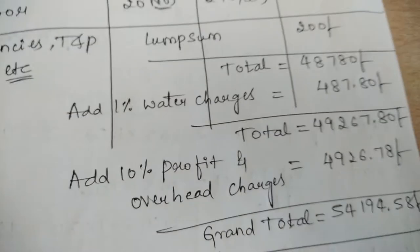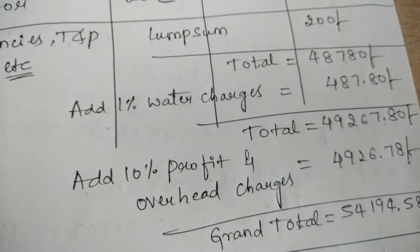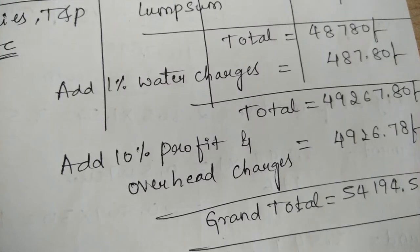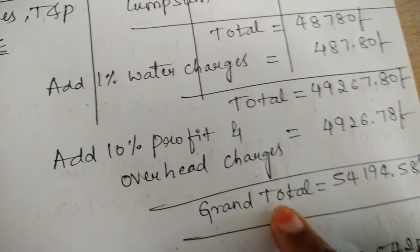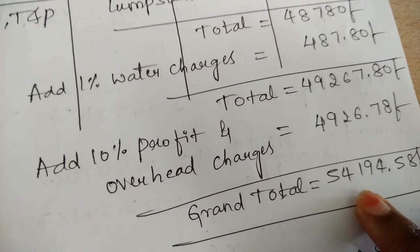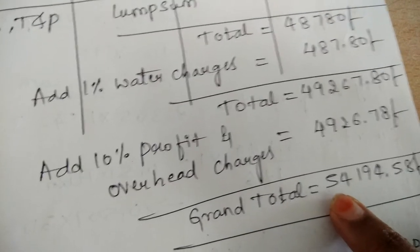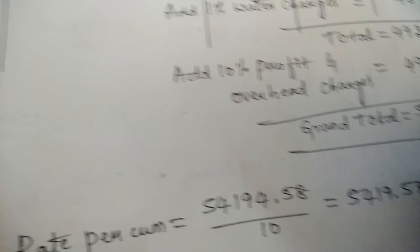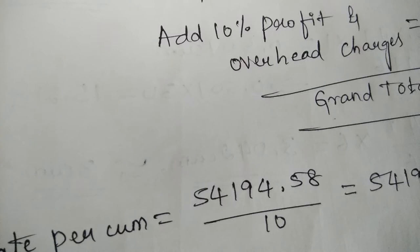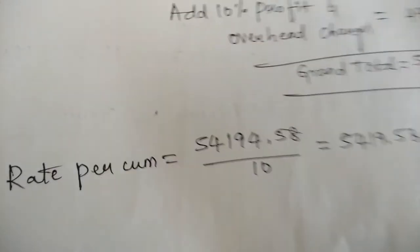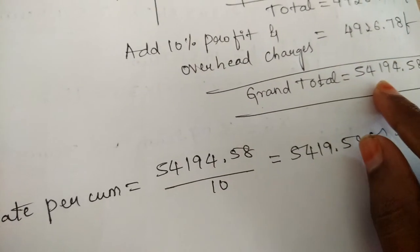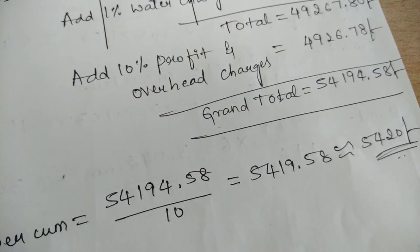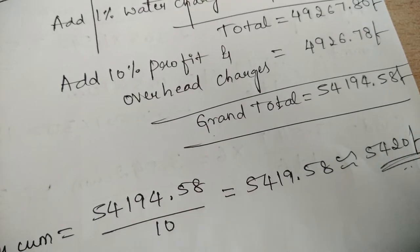That means for 10 cubic meter of volume, constructing a brick masonry work requires a total amount of 54,194 rupees. If you want to find the rate for one cubic meter, divide the total amount by 10. On dividing, you get 5,419 rupees — approximately take the value as 5,420 rupees per cubic meter.